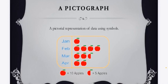So according to the information, January represents 10 apples, February represents 40 apples, March represents 25 apples and April represents 20 apples. In this way we can draw a pictograph to show certain information.